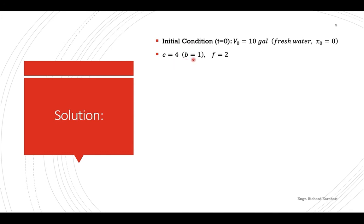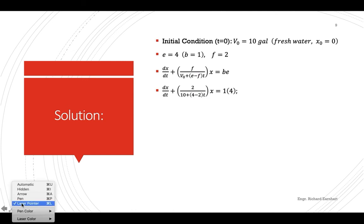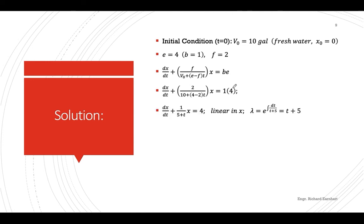E equals 4, B equals 1, and the rate out F equals 2. Substituting into the rate equation: the initial volume is 10, and E minus F equals 4 minus 2 equals 2. Simplifying gives a coefficient of 1/(t+5) on the left-hand side and 4 on the right-hand side.